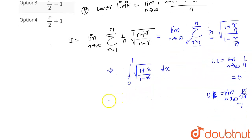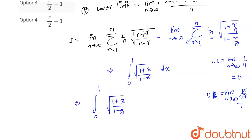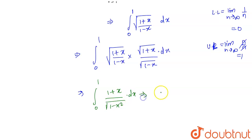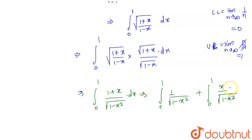Now let's solve this integral. We rewrite √((1+x)/(1-x)) by multiplying and dividing by √(1+x)/√(1-x), giving (1+x)/√(1−x²). This splits into two integrals: the integral from 0 to 1 of 1/√(1−x²) dx, plus the integral from 0 to 1 of x/√(1−x²) dx.